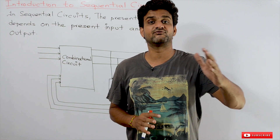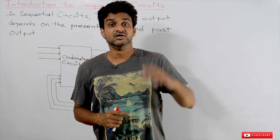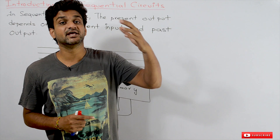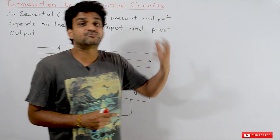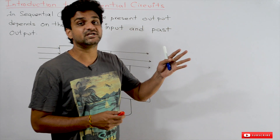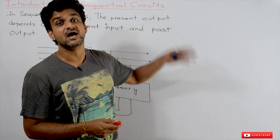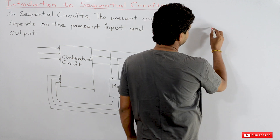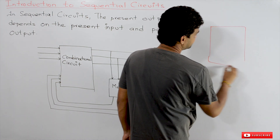In the previous section we discussed about combinational circuits — lots of different types. One common point observed in every combinational circuit is that the output we obtain is totally dependent upon the present input.